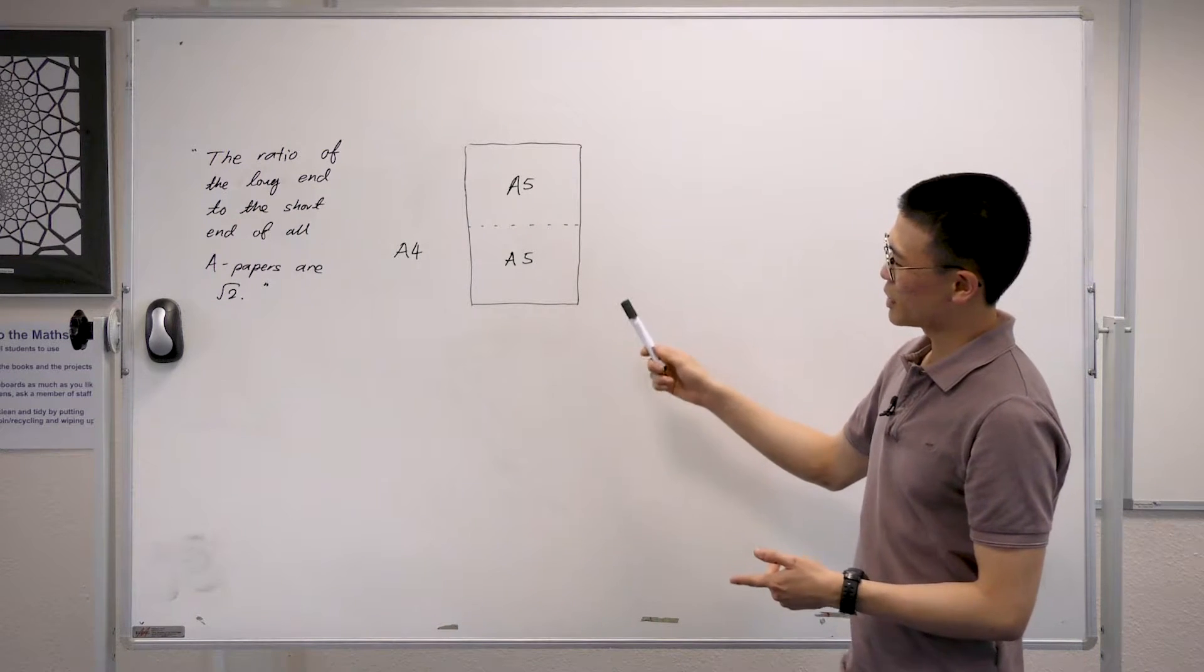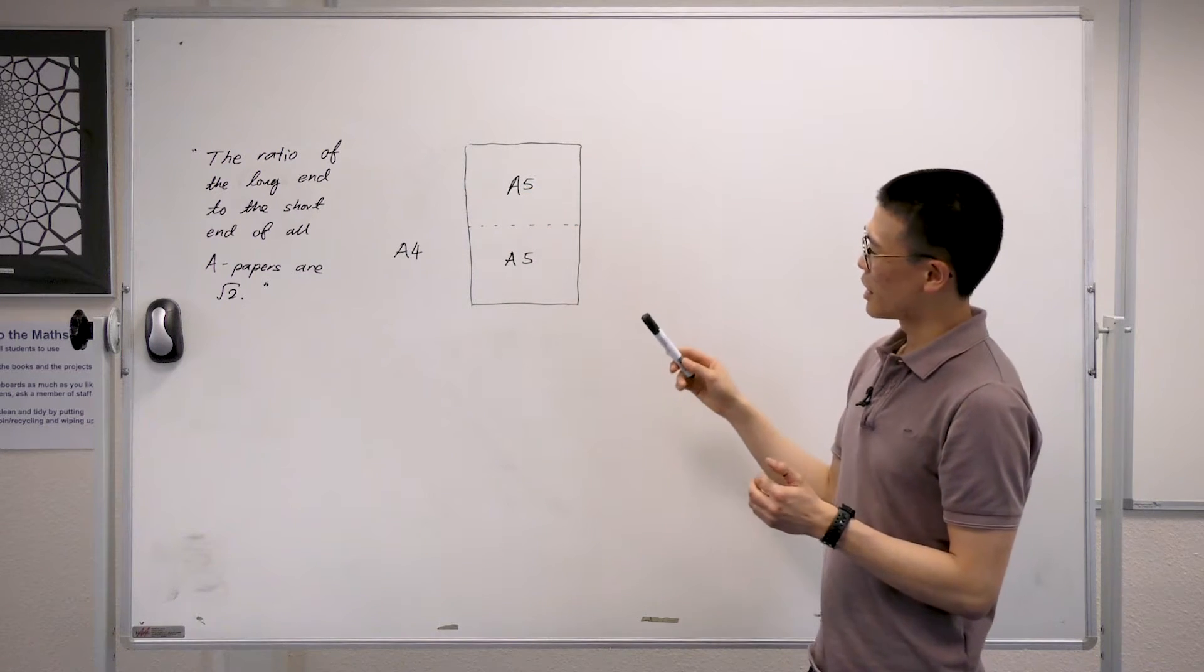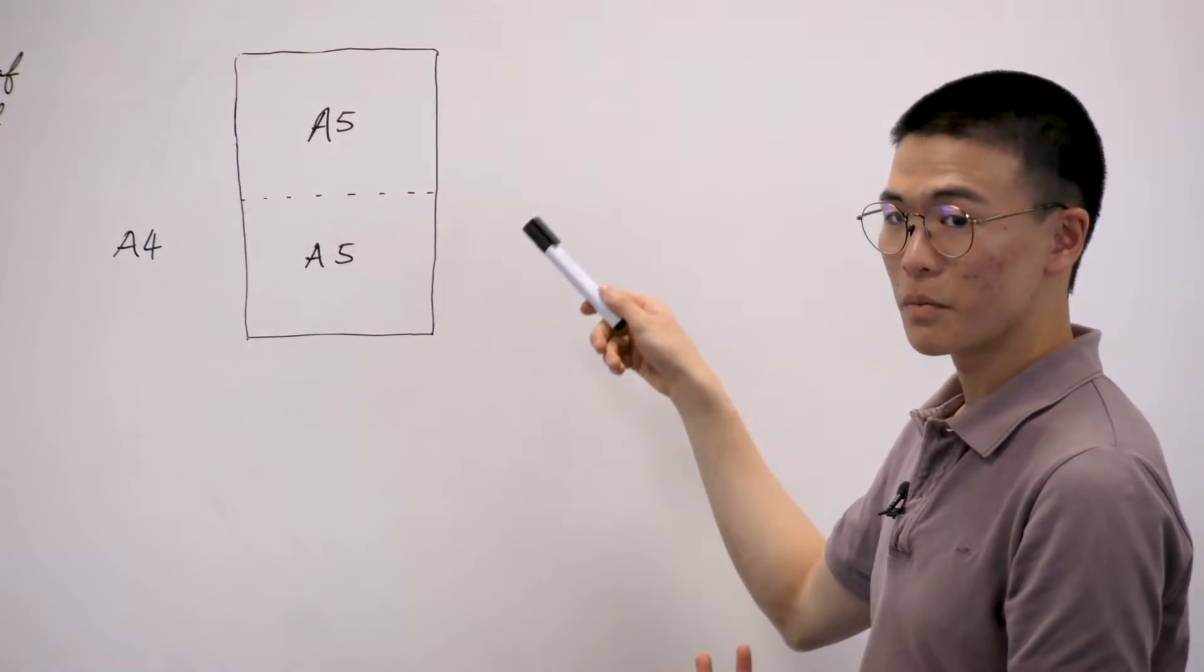So in this case, you can see that in this example, we have an A4-sized paper. And if you imagine folding it in half, you can get two similarly sized A5 papers.